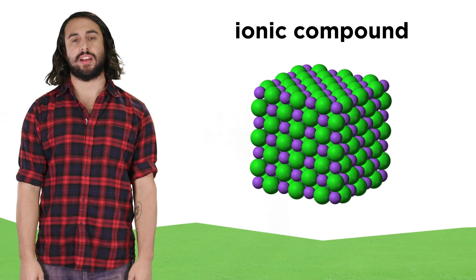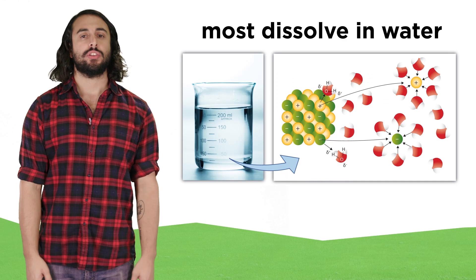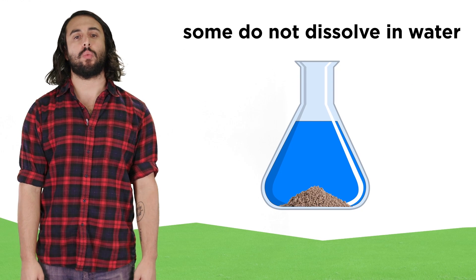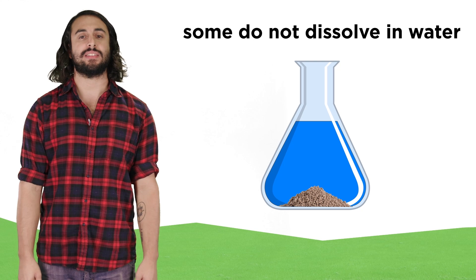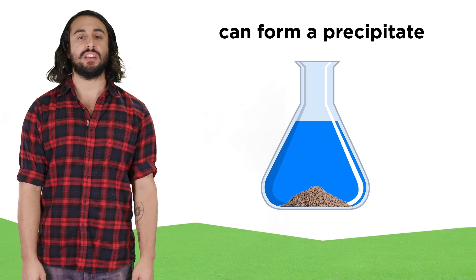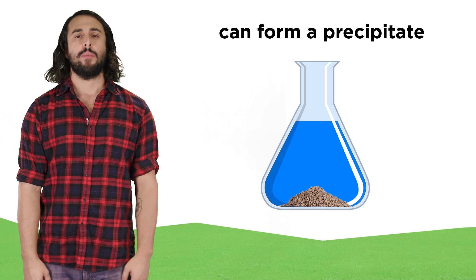We know a lot about different kinds of ionic compounds and how they will behave in aqueous solution. Some are water soluble and will dissolve in water, while some are water insoluble and will remain solid in water, and can also form as a precipitate if the individual ions involved find each other in solution.